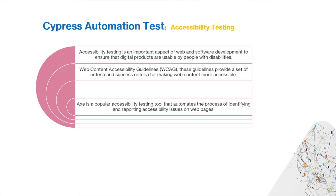In today's video, we're going to talk about accessibility testing using Cypress Automation Testing. Accessibility testing is an important aspect of web and software development to ensure that digital products are usable by people with disabilities. Web Content Accessibility Guidelines provide a set of criteria and success criteria for making web content more accessible. AXE is a popular accessibility testing tool that automates the process of identifying and reporting accessibility issues on webpages.